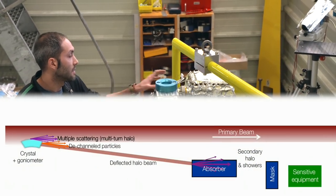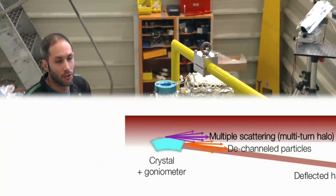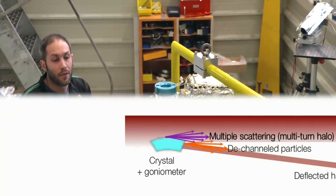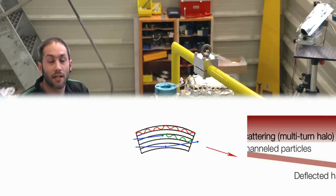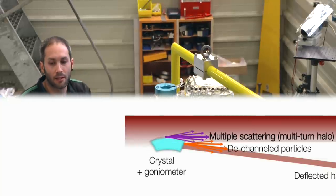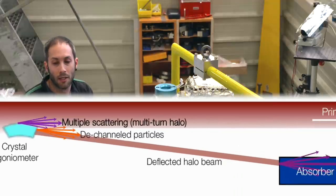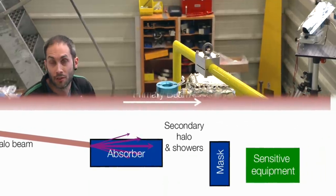inside this device we have a crystal which if it's properly bent and faced to the beam can create what we call a channeling effect which deviates the halo particles that we don't want into a downstream absorber in order to catch them.